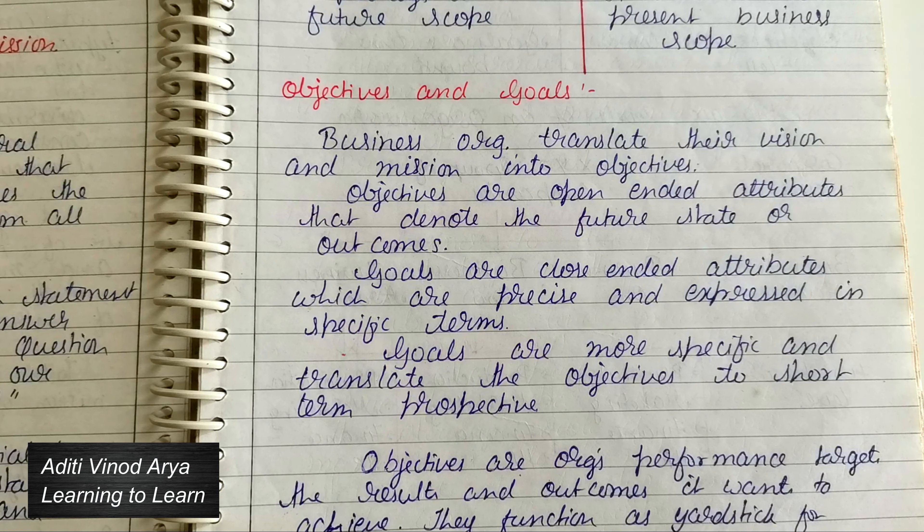After vision and mission statement, we can create objectives or goals. Now you may not fully understand how business organizations translate their vision and mission statement into objectives and goals.